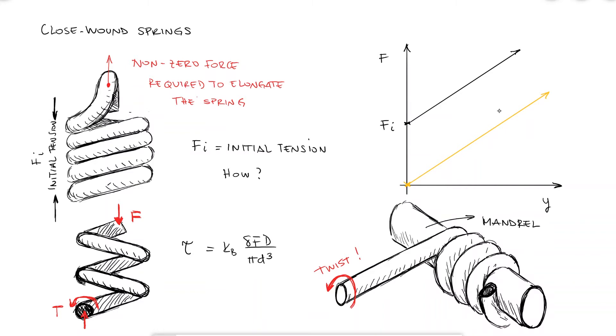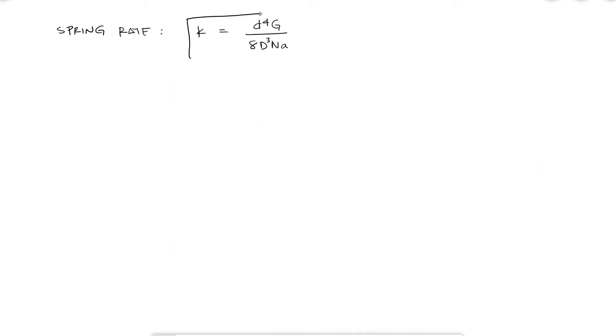For this reason the load versus deflection relationship is not just ky but ky plus that initial tension at a zero deflection. Just like the compression stresses in either extension or compression springs, the spring constant k is calculated with the same expression we derived during the first spring video.